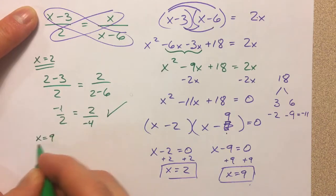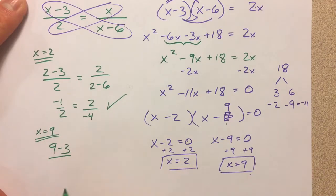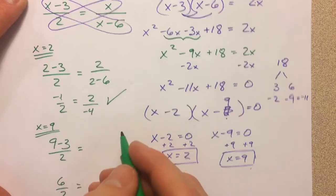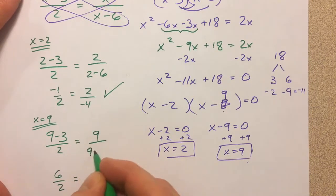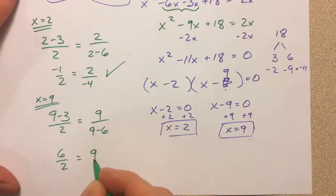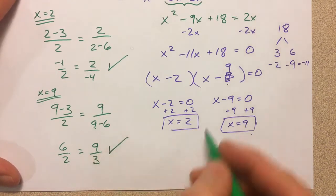And x equals 9. If I do 9 minus 3, which is 6, divided by 2, and x is 9, I'm plugging in 9, 9 minus 6, so I get 9 divided by 9 minus 6 is 3. And so this is 6 divided by 2 is 3, 9 divided by 3 is 3, and so that works out as well.